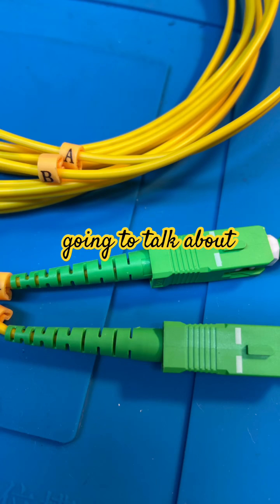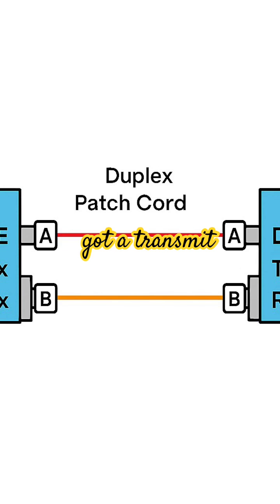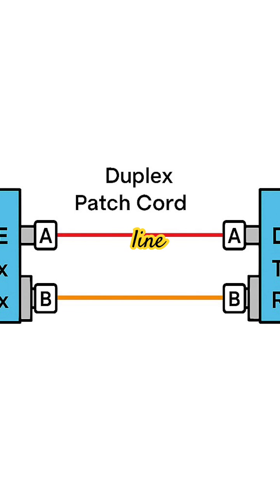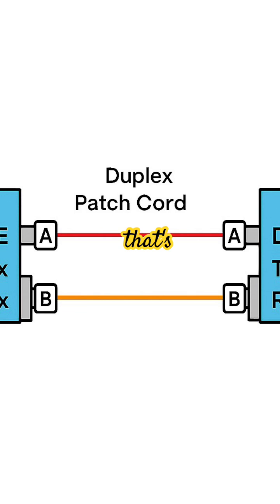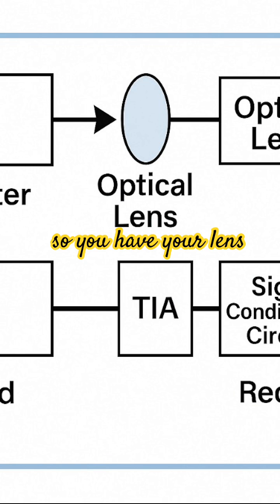Today we're going to talk about why patch cords have an A and a B. That's because you have a transmit and a receive on separate lines. Your upload goes on the transmit line and your downloads go on the receive line — that's why you have two lines for your fiber optic.